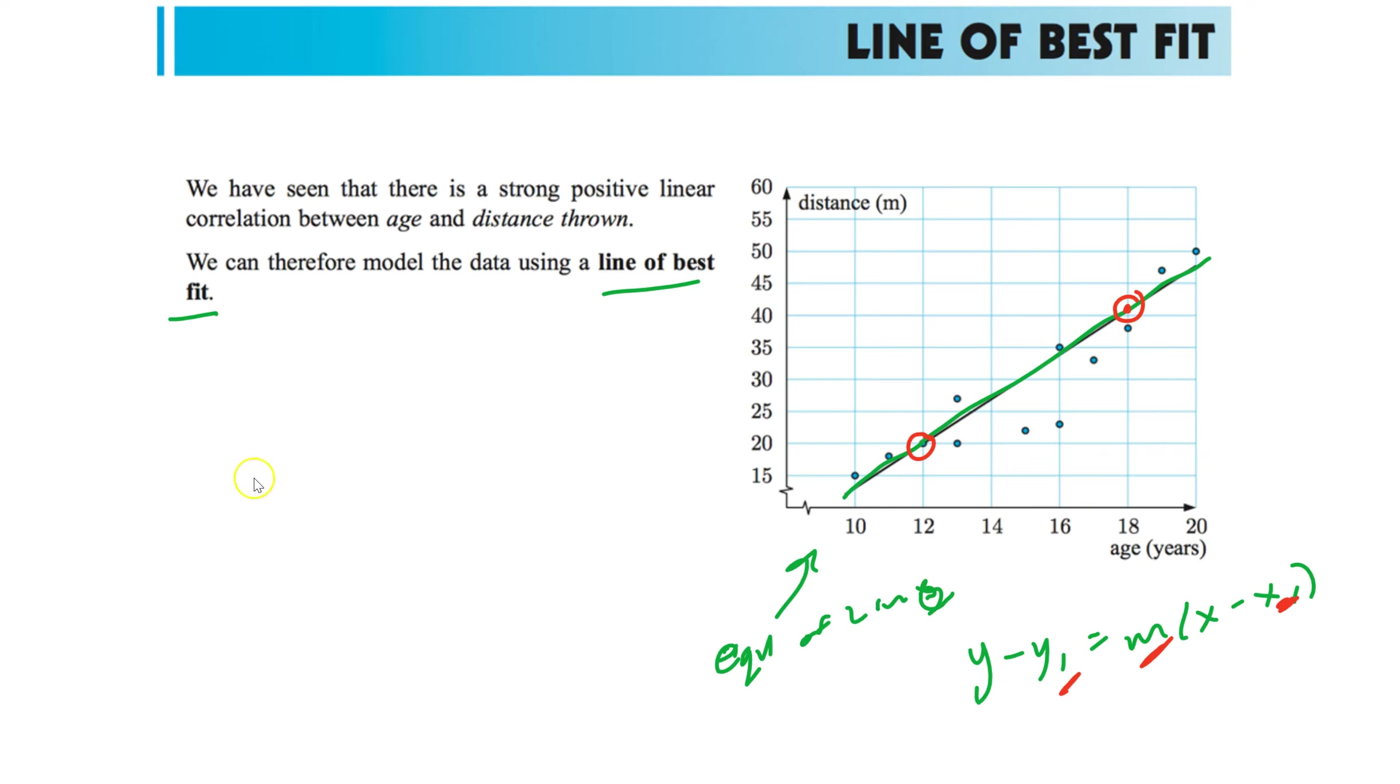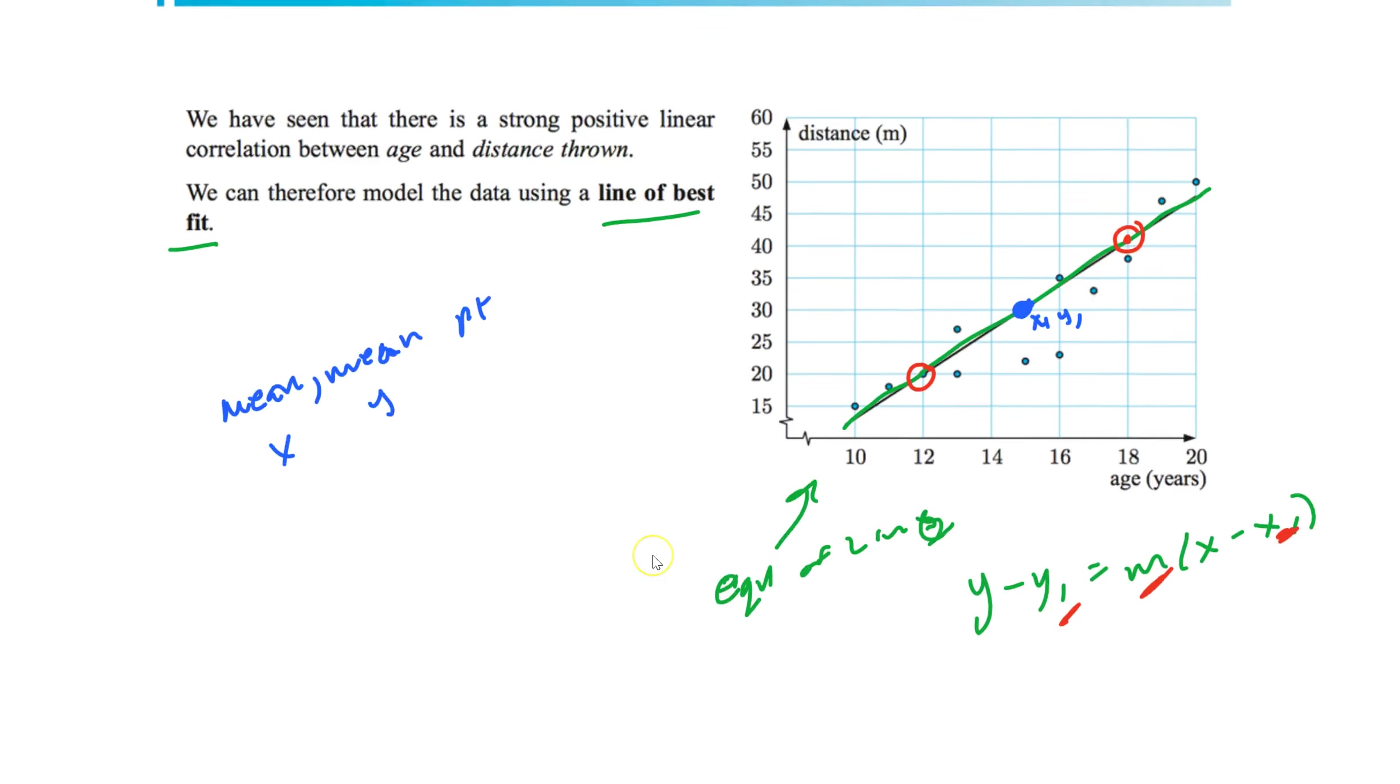IB likes to use a point called the mean mean point. I've never seen this on a test, but it's in the book. All that is is you find the mean of your x's. The mean of your y's. So you get all your x's to average them out. You get a point right there. And that's the point they use for x1 and y1. That's what IB likes to do. But again, I've never seen it on a test. So let's move on.